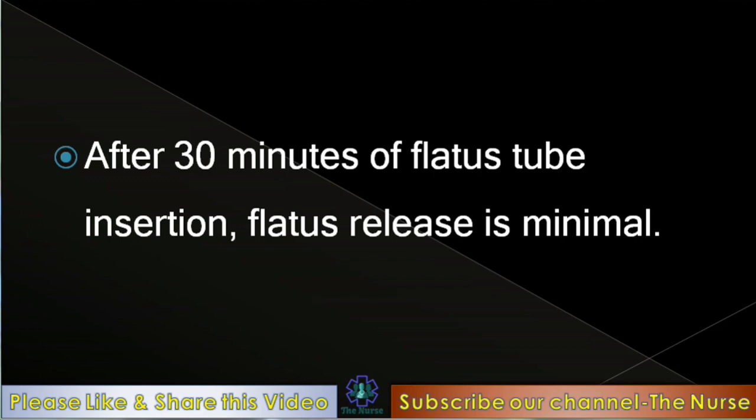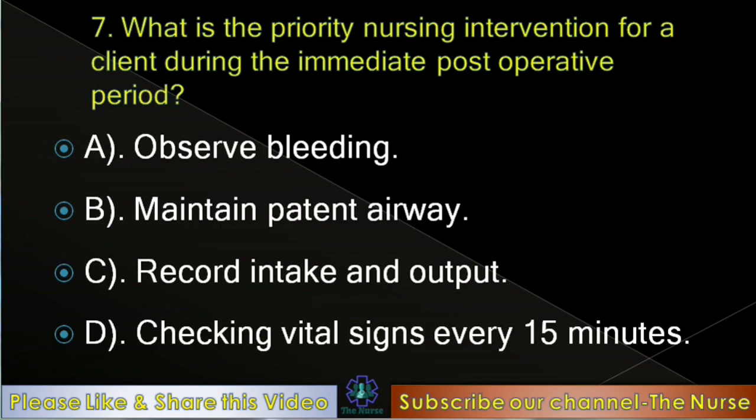Next question: What is the priority nursing intervention for a client during the immediate postoperative period? Options: Observe bleeding, maintain patent airway, record intake and output, checking vital signs every 15 minutes. Correct answer: Maintain patent airway.